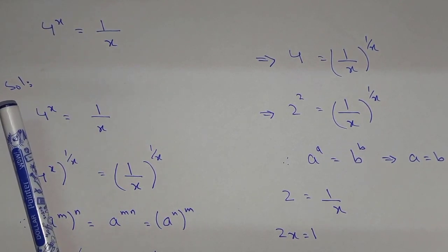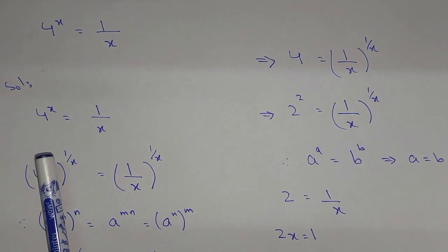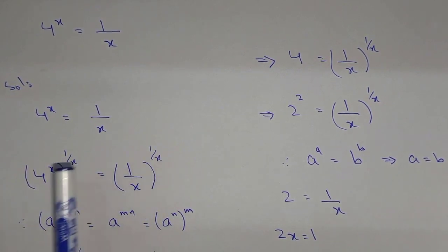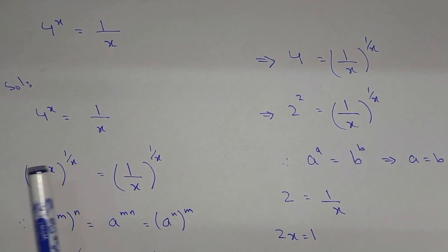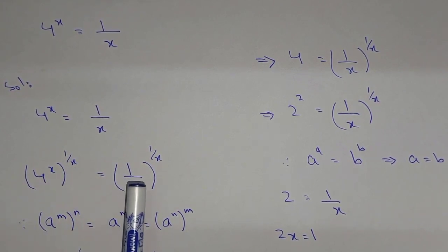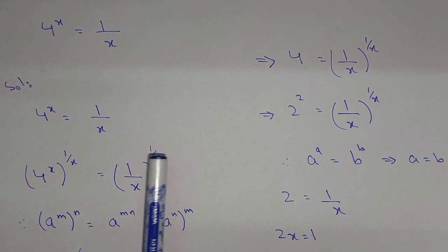Therefore, 1/x on both sides in the power. So here we have (4^x)^(1/x) = (1/x)^(1/x).